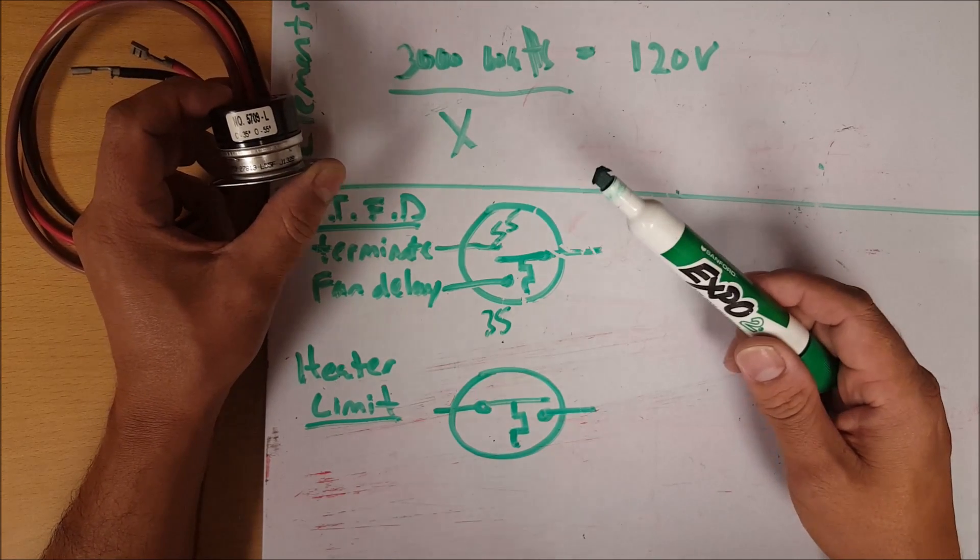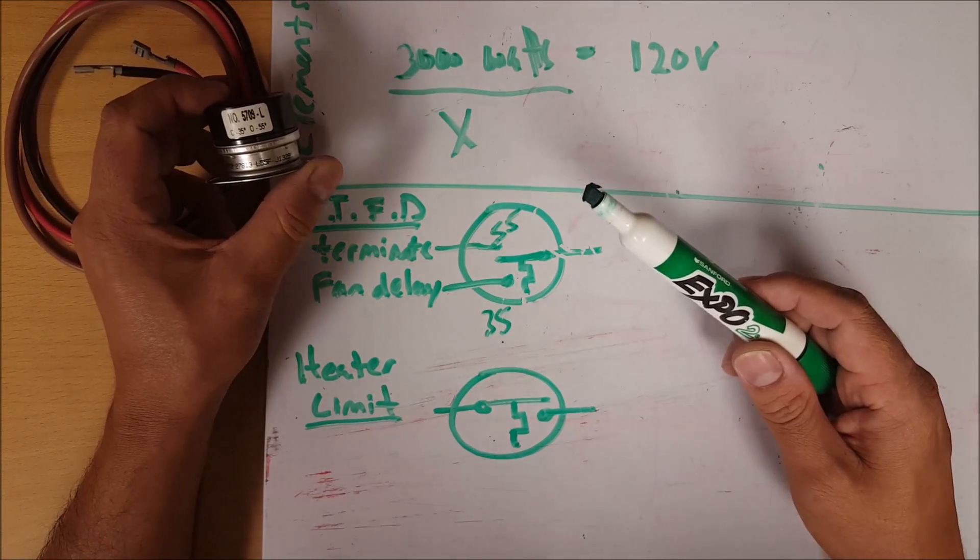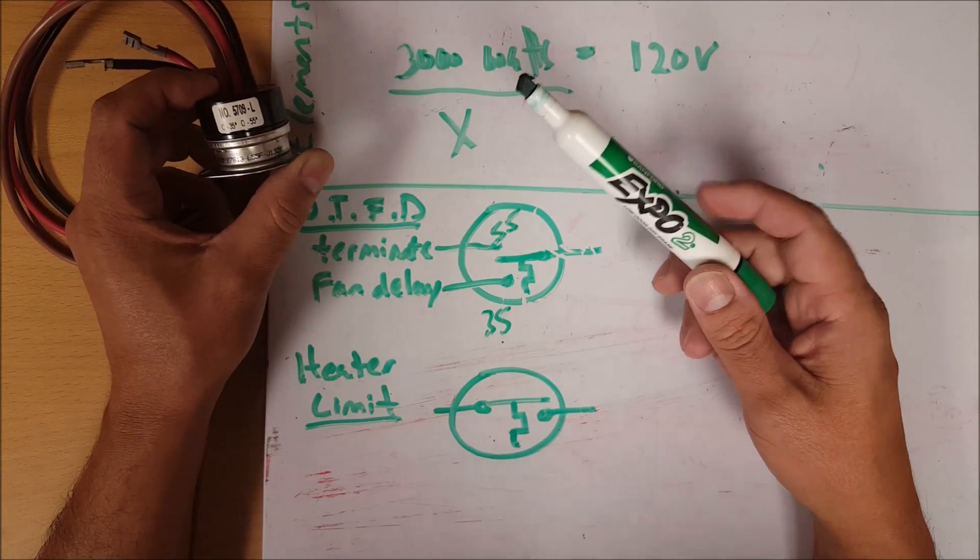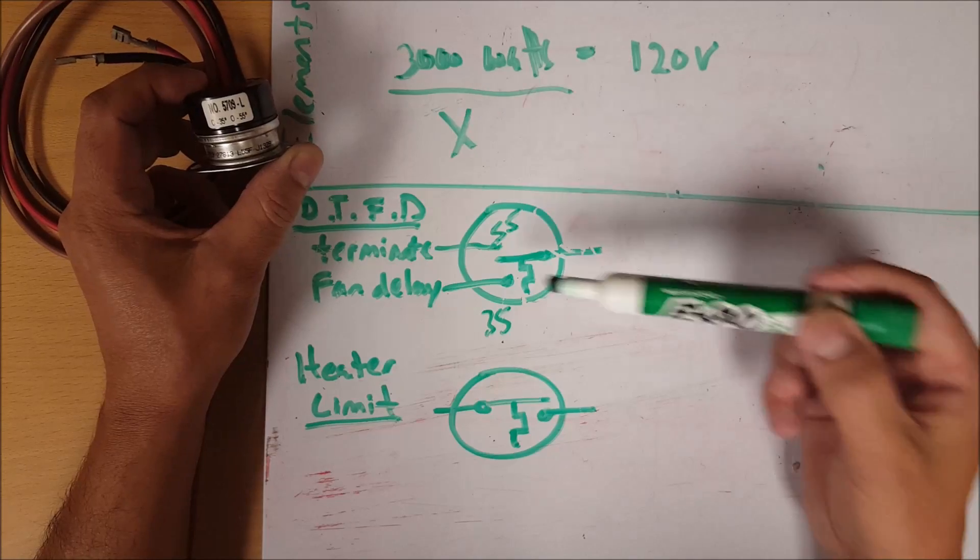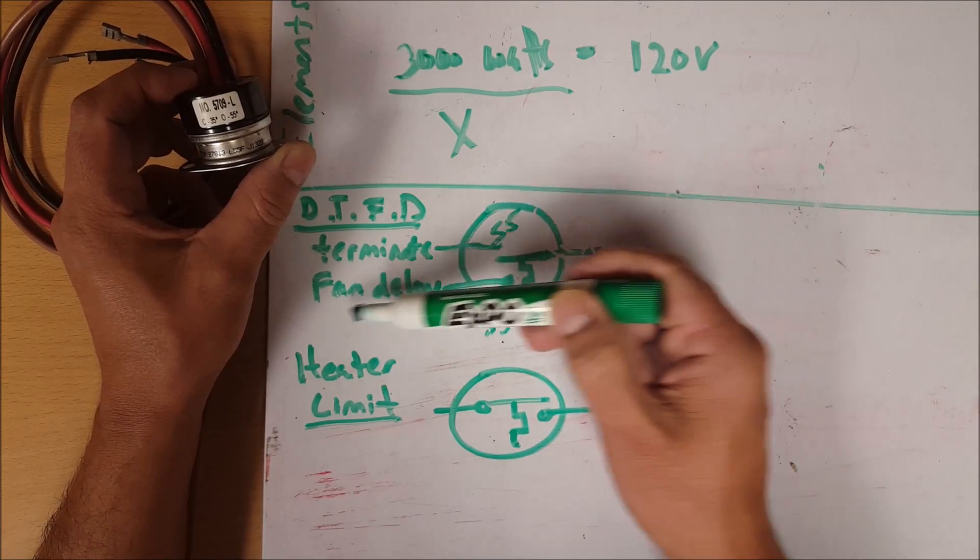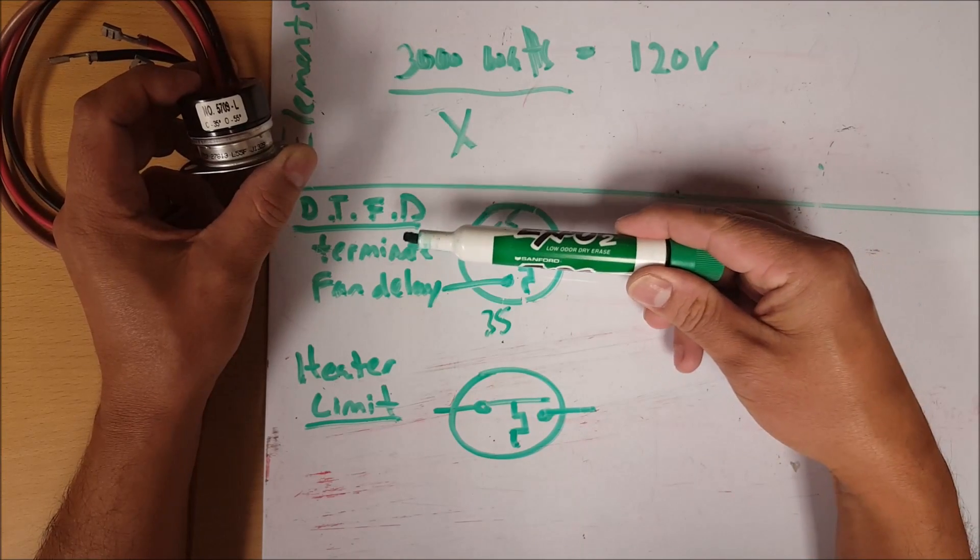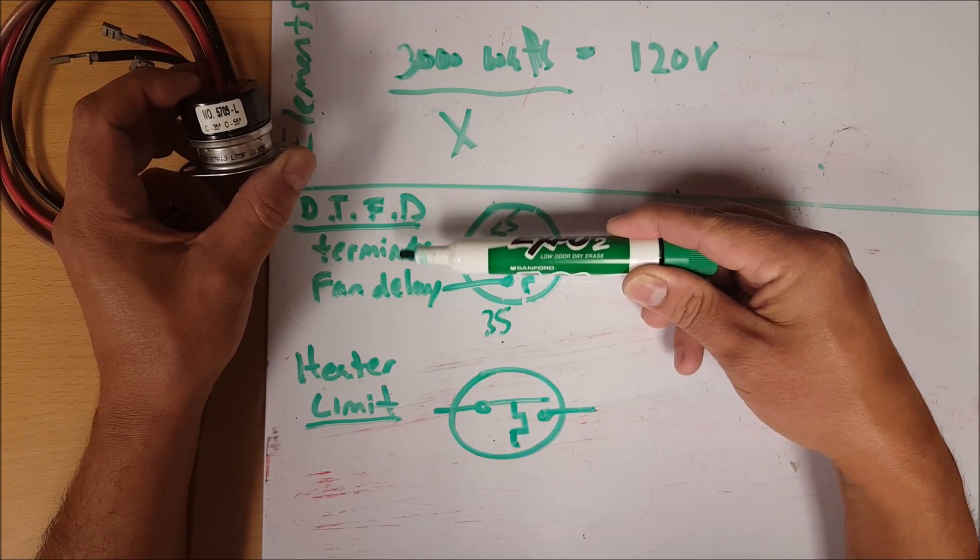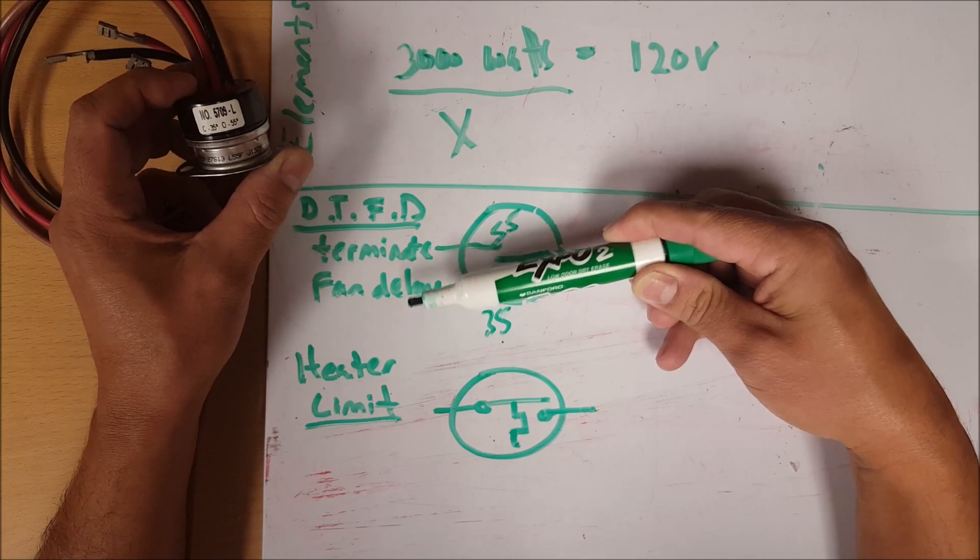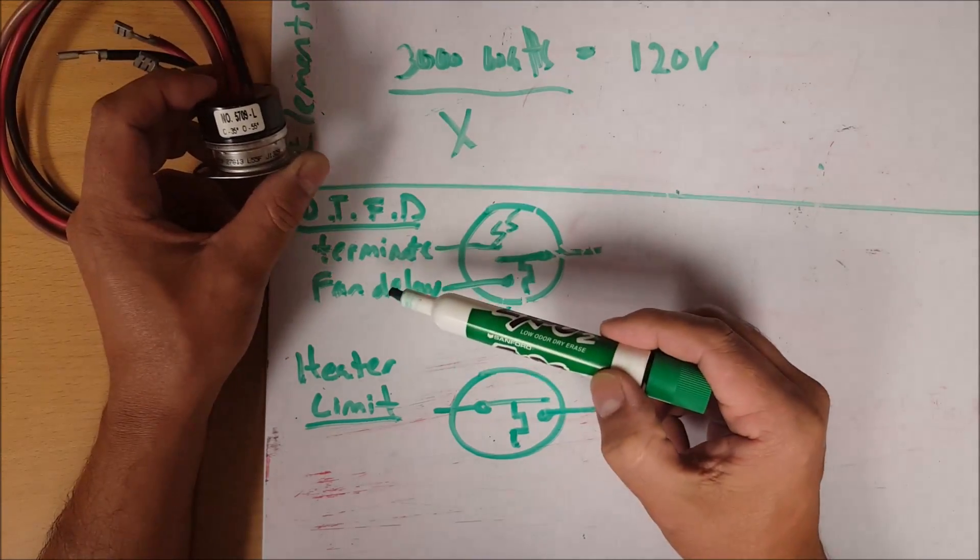Once your refrigeration system begins to run, your evaporator is going to get cold again. Your fans are not going to come on because this switch is still open. This wire runs in series with your fan motors. Once the temperature of that coil or this switch hits 35 degrees, then this completes the circuit and your fans come on.